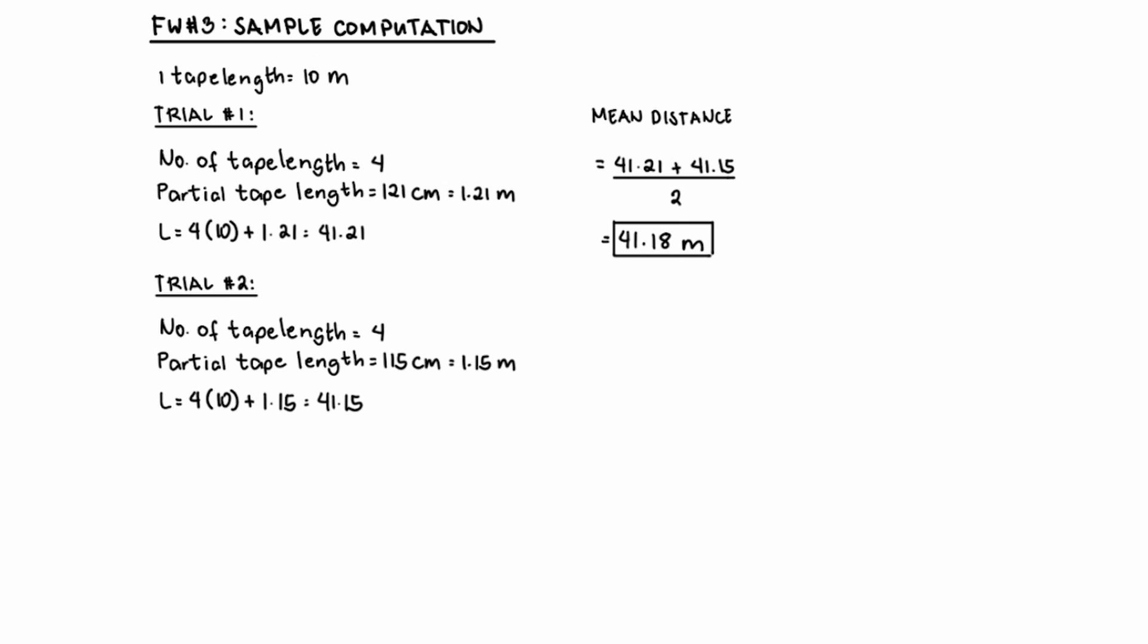Next, write out your data for trial 1. So for example, here, the number of full tape lengths that we have is 4. And then the partial tape length, as shown earlier, is 121 centimeters. Convert that to meter, you have 1.21 meter. So to get the total length between your two points, we're going to multiply the number of tape length, which is 4, by the measure of that tape length, which is 10.